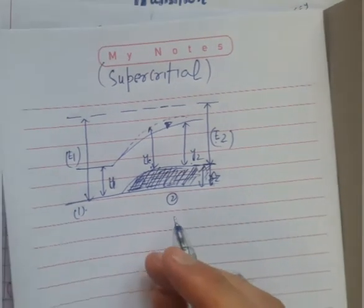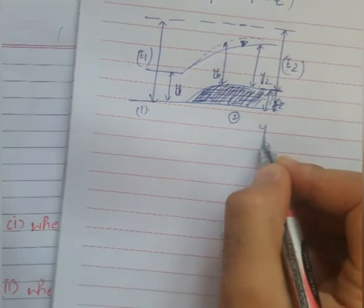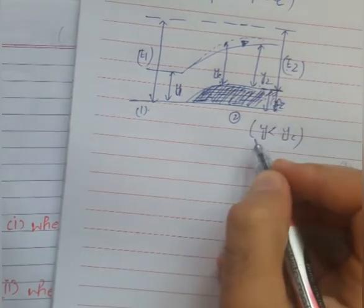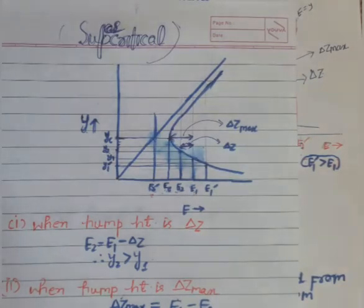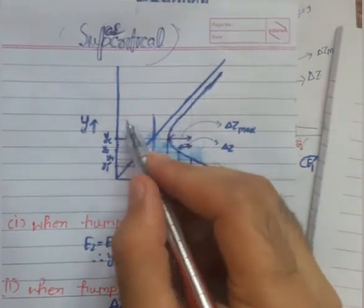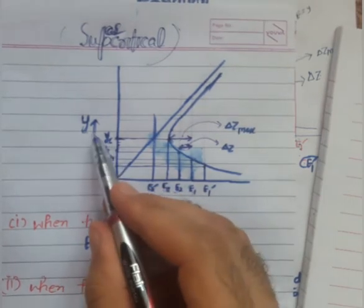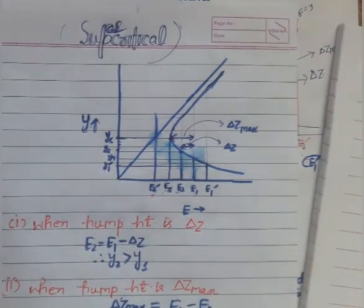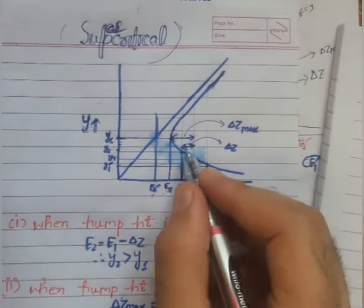Now coming to the graph: in supercritical flow, y is less than yc — the depths of flow are less than the critical depth. That is why we have taken these two depths y1 and y2, both less than yc. This is the plot showing y on one axis and specific energy on the other.